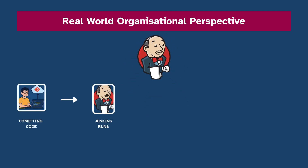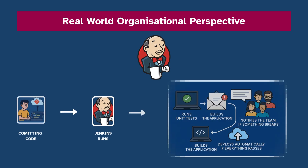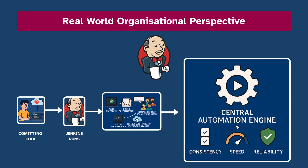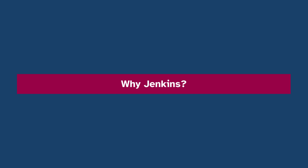With Jenkins in place, the entire process is automated. As soon as code is pushed, Jenkins picks it up, runs unit tests, builds the application, notifies the team if something breaks, and even deploys it automatically if everything passes. It acts as a central automation engine that ensures consistency, speed, and reliability across the organization, no matter how many teams are working on the product.